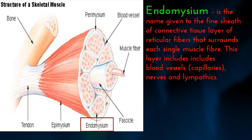Endomysium is the name given to the fine sheet of connective tissue layers of reticular fibers that surround each single muscle fiber. This layer includes blood vessels, also known as capillaries, nerves, and lymphatics.